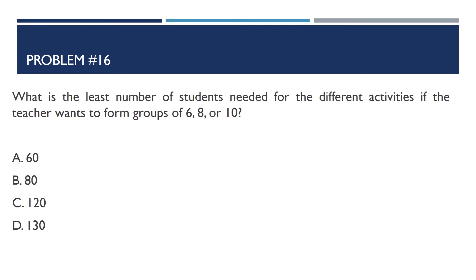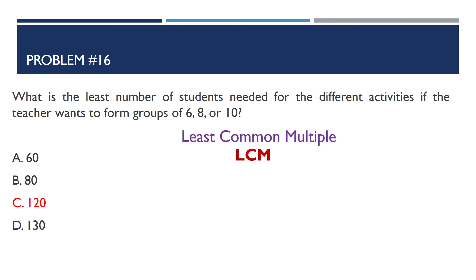Problem number 16: What is the least number of students needed for different activities if the teacher wants to form groups of 6, 8, or 10? The answer is 120. We use the LCM (least common multiple) of 6, 8, and 10.